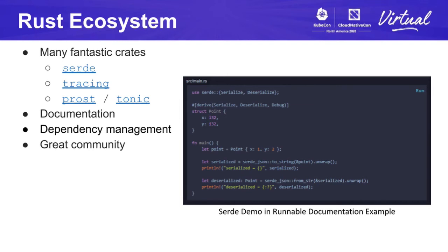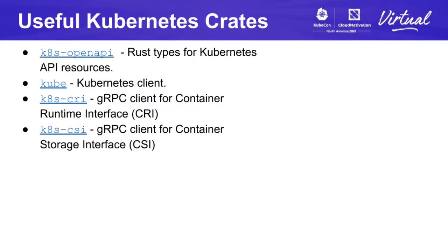Finally, the Rust community is very welcoming and helpful. I've found that their approach and attitude is what makes the language and crates so high quality and what makes programming in Rust a real pleasure. I would also like to mention some useful crates specifically for Kubernetes development in Rust. k8s-openapi contains automatically generated types for the Kubernetes OpenAPI spec — it is very useful for manipulating Kubernetes manifests, and its docs are actually the main docs I use for referencing Kubernetes API resources. Second is kube, which is the primary Kubernetes client for Rust; it is what Krustlet uses to parse kubeconfig, connect to the API server, patch resources, and watch for pod changes. Finally, k8s-cri and k8s-csi are crates that I have published which provide automatically generated gRPC clients for CRI and CSI respectively.